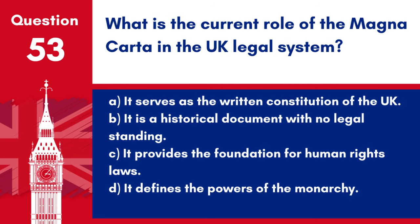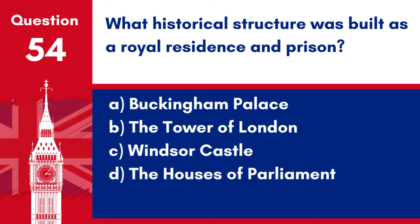Question 53. What is the current role of the Magna Carta in the UK legal system? a. It serves as the written constitution of the UK. b. It is a historical document with no legal standing. c. It provides the foundation for human rights laws. d. It defines the powers of the monarchy. Answer: c. It provides the foundation for human rights laws. The Magna Carta, while a historical document, continues to influence the principles of justice and liberty and is considered a foundational document for human rights.